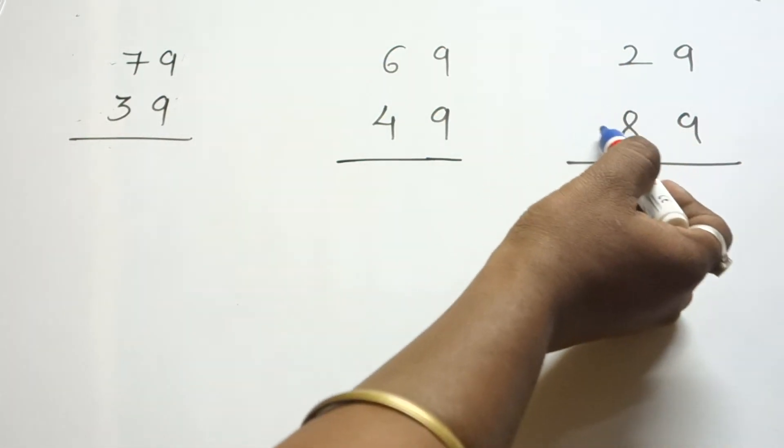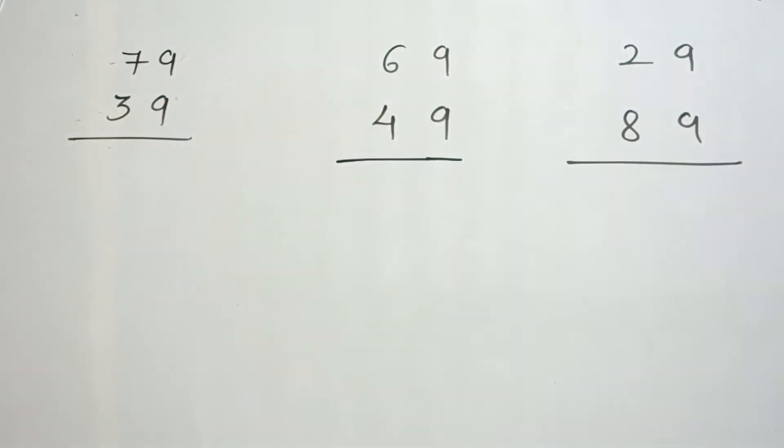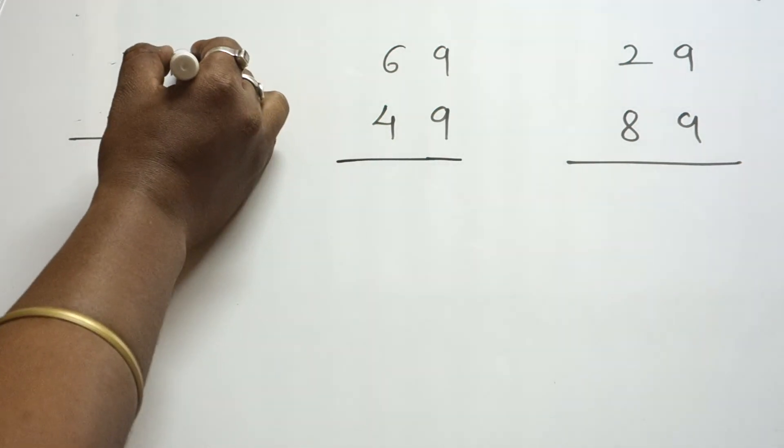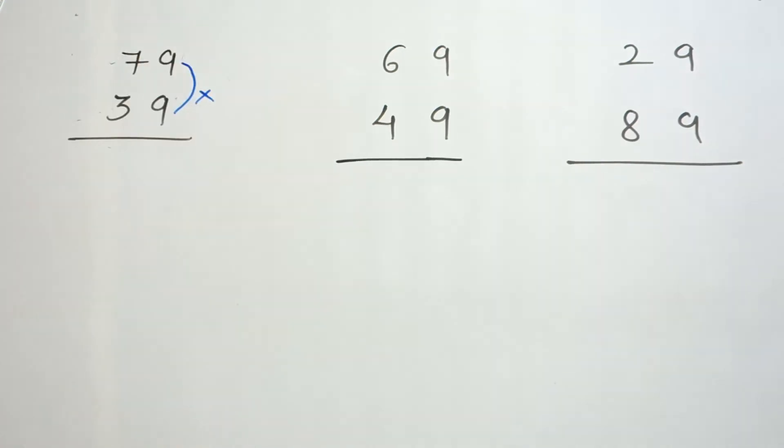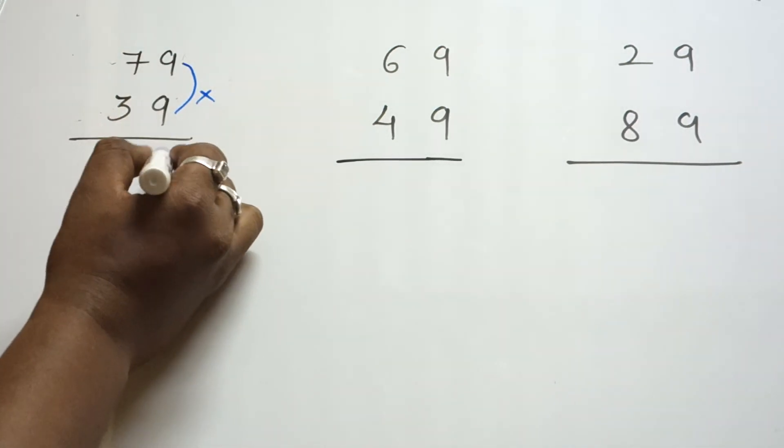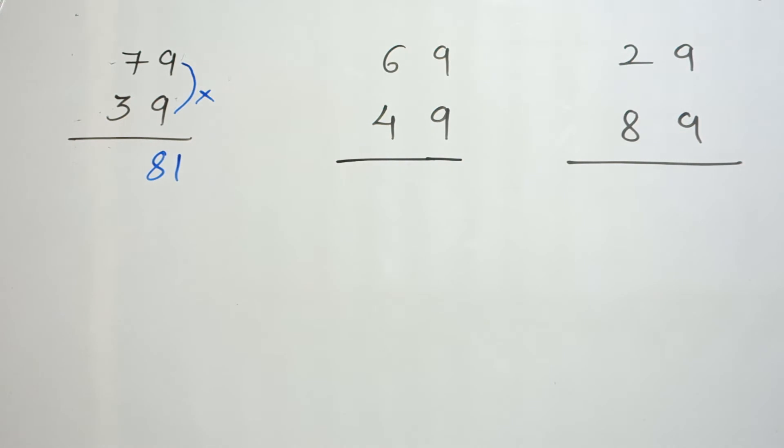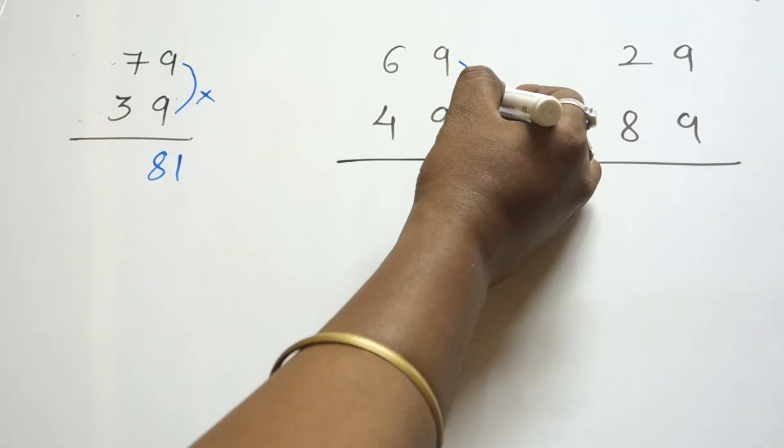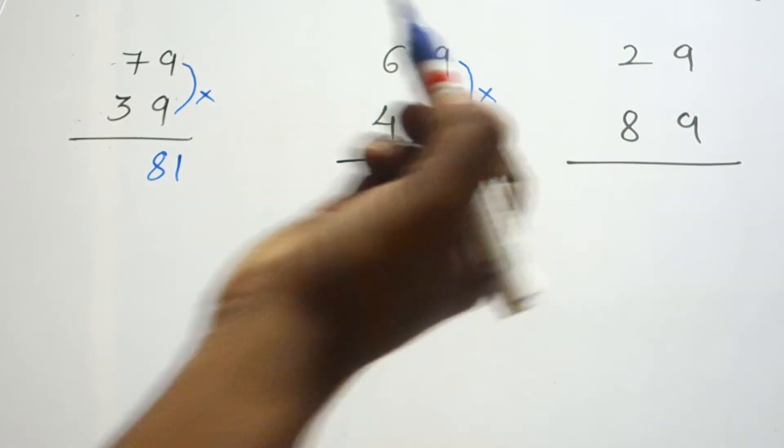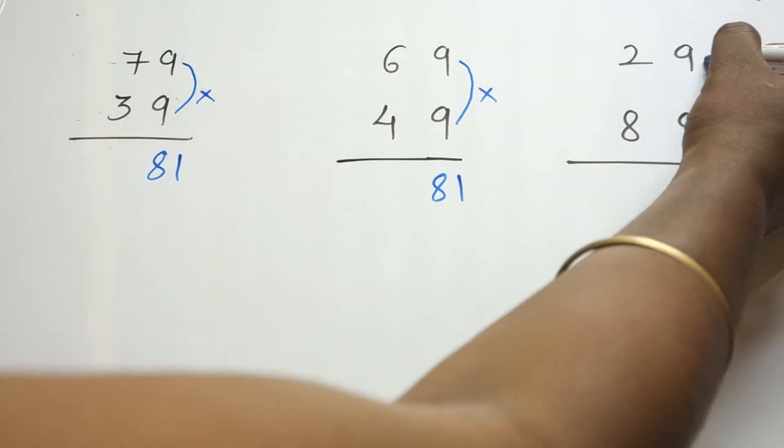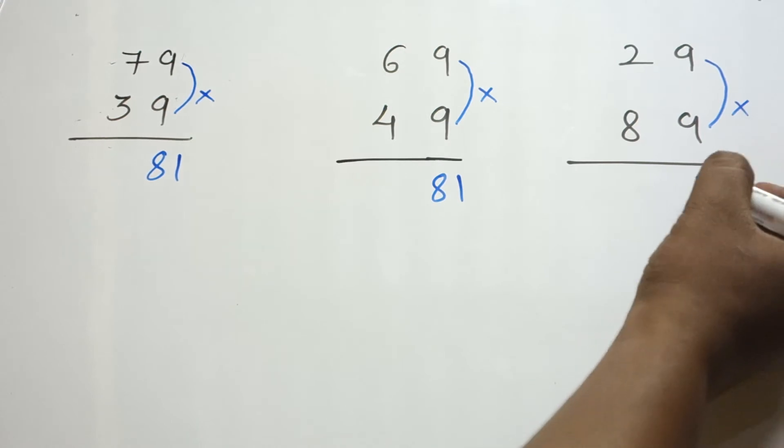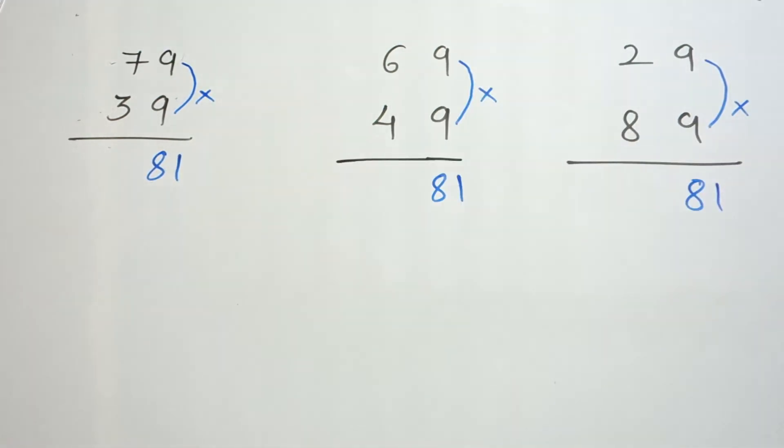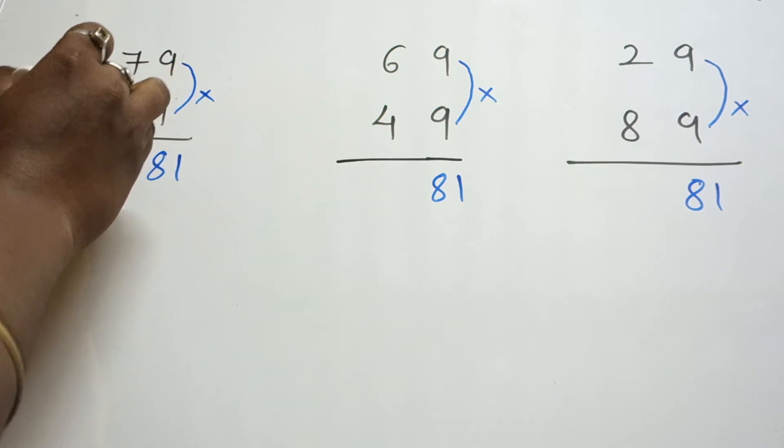So let's begin with the tricks. Simply what you have to do: multiply this number, so 9 times 9 is 81. Multiply this number, so 9 times 9 is 81. Multiply this number, so 9 times 9 is 81.